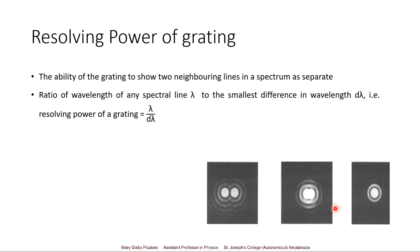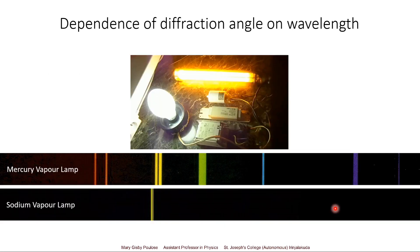In the case of the spectrum, the resolving power of the mercury vapour lamp can be defined as the wavelength of the yellow line divided by the difference in the wavelengths of the yellow one and yellow two lines. Similarly, in the sodium vapour lamp we have two yellow lines very close to each other, so the resolving power can be taken as the wavelength of the yellow line divided by the difference in wavelengths of the two nearby yellow lines.